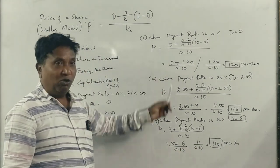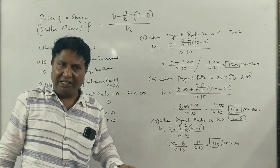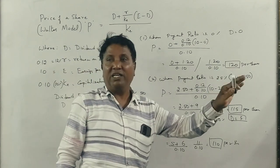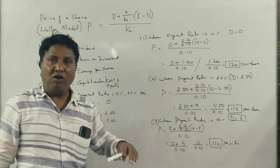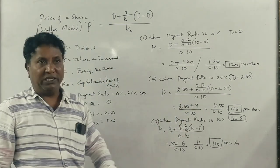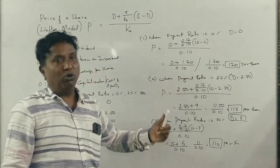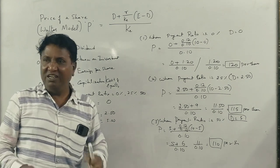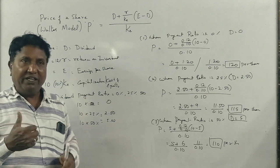So comparing all three cases: at 0% payout the share price is 120 rupees, at 25% payout it is 115 rupees, and at 50% payout it is 110 rupees. This is the Walter model for determining the price of a share.